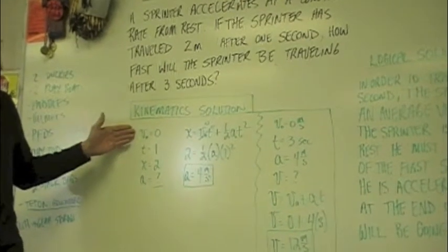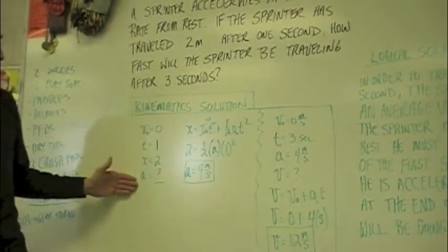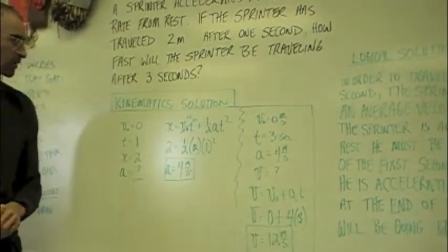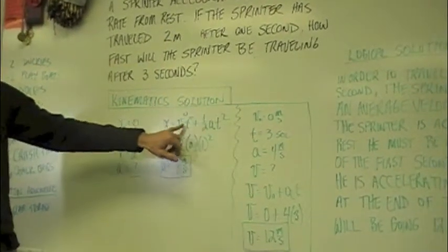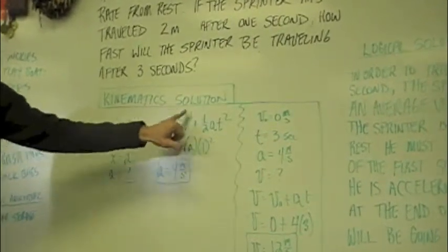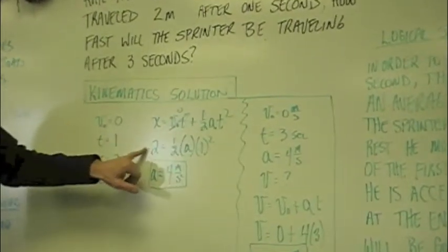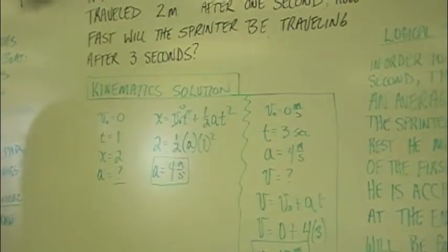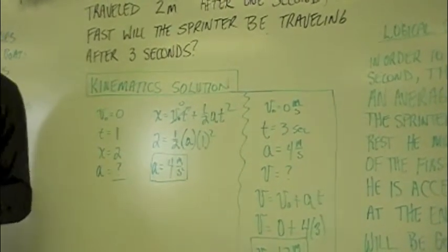Kinematics-wise, looking at those four variables, we choose this kinematic equation. The initial velocity term goes to zero, so we can solve: 2 = ½a(1)². We get an acceleration of four meters per second squared.